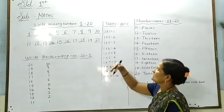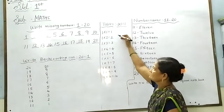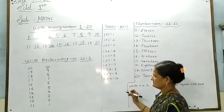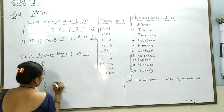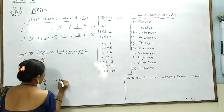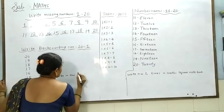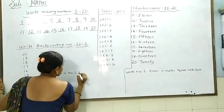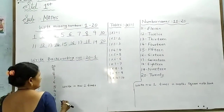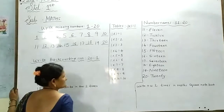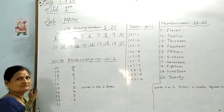Let's go back. One of the tables: one one is one, one two is two. Two times. Okay, that is two times. Thank you.